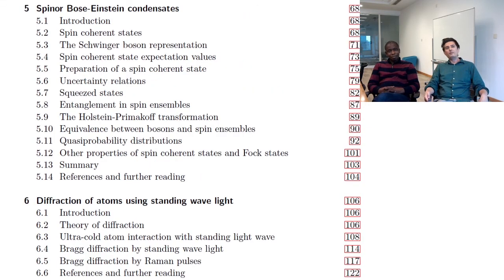And chapter five, this is one of my favorite chapters. This is a spin of Bose-Einstein condensates. So this is talking about various types of states that you can make with the spins of BEC. So these are like things like squeezed states and how you can get entanglement in such states and so forth. And also look at different quasi distributions, how to view these states, how to characterize them or visualize them.